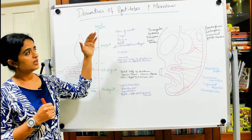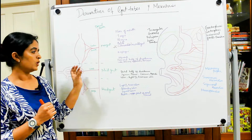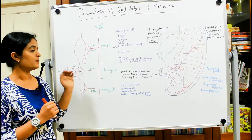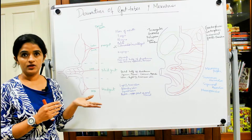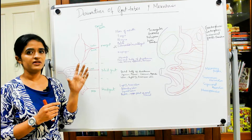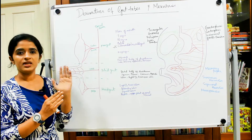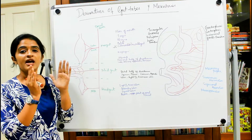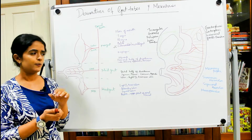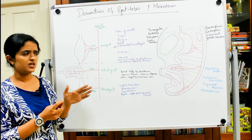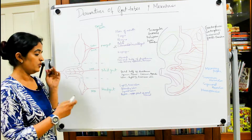Coming to the derivatives of the midgut — the midgut gives rise to the remaining distal half of the duodenum, then the jejunum and ileum. So the entire small intestine apart from the proximal half of the duodenum is derived from the midgut. When you come to the large intestine, you have the cecum and appendix.